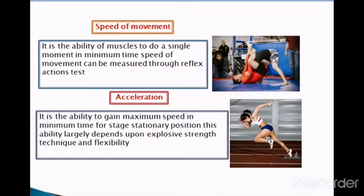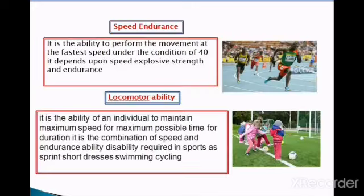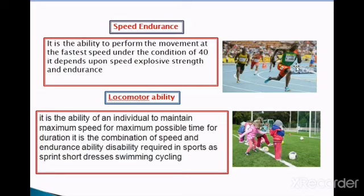The next type is speed endurance — the ability to perform movement at fast speed even under conditions of fatigue. When an athlete is tired, they must still maintain their movement speed. Examples include the 400-meter and 200-meter races, where athletes must run continuously at a constant speed even while fatigued.